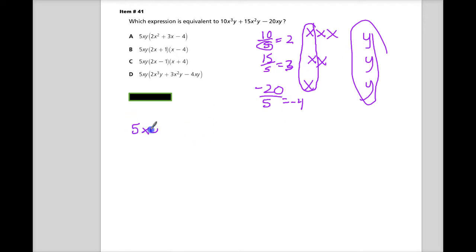So 5xy. The nice thing about this is it tells me what's left over. In the first case, it's 2 and 2x's, so x squared, plus 3 and an x, minus 4.